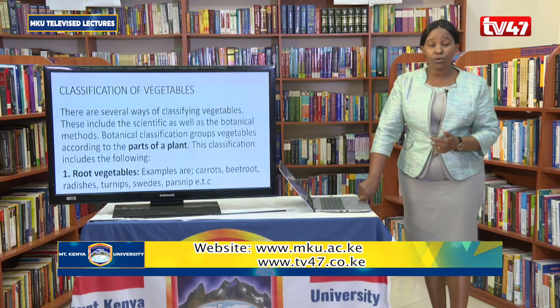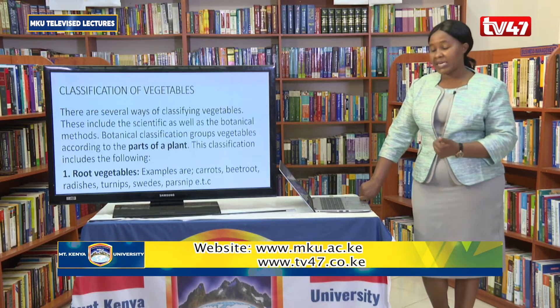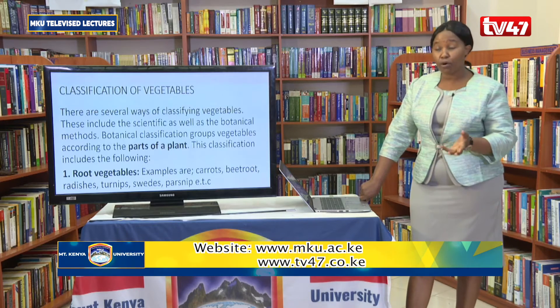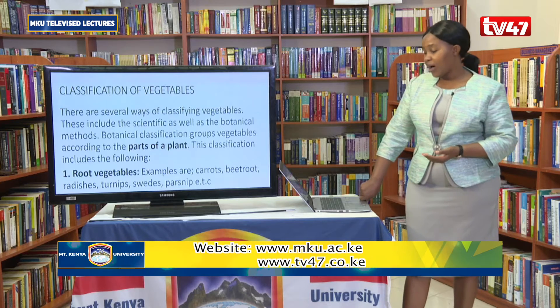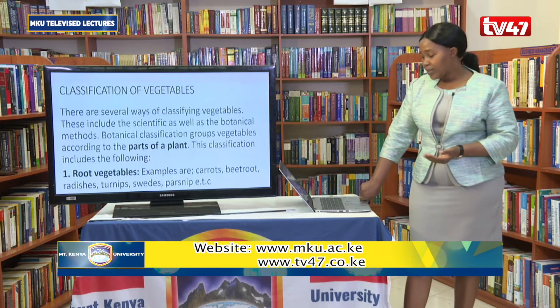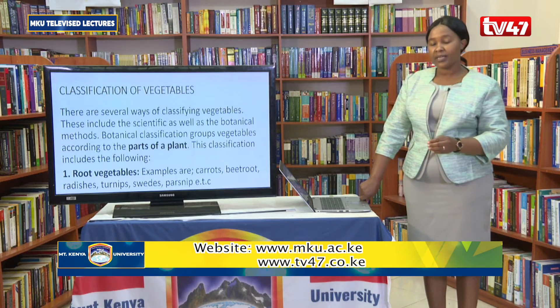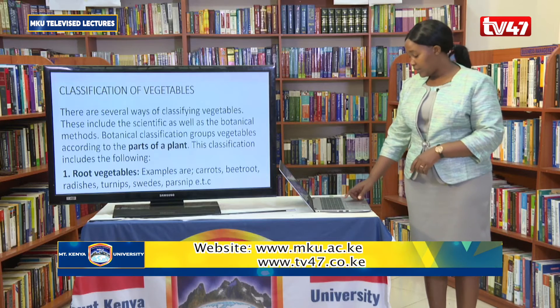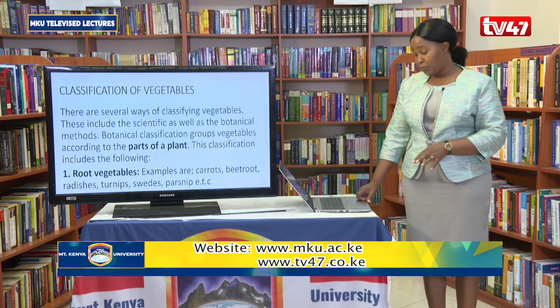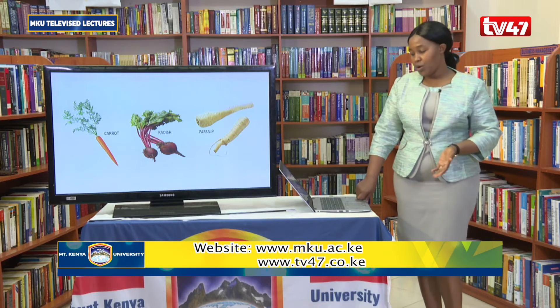The first category is root vegetables. As the name suggests, they are taken from the root part of a plant. Examples include carrots, beetroots, radishes, turnips, swedes, and parsnips — any vegetable grown underground as a root. We have the carrots, very nutritious. We have radish and parsnip. All these are examples of root vegetables.